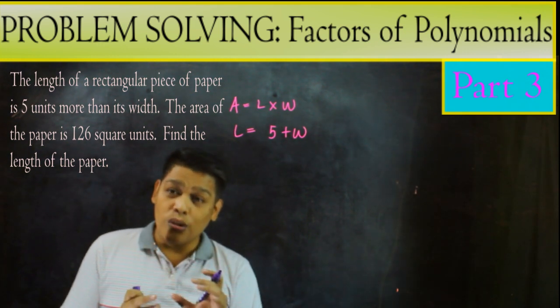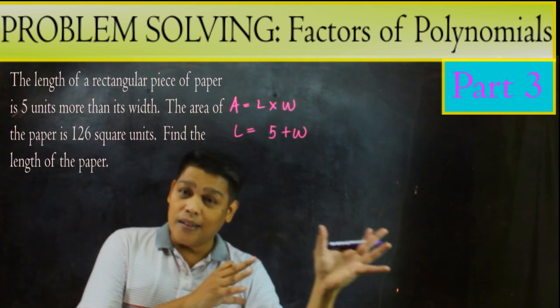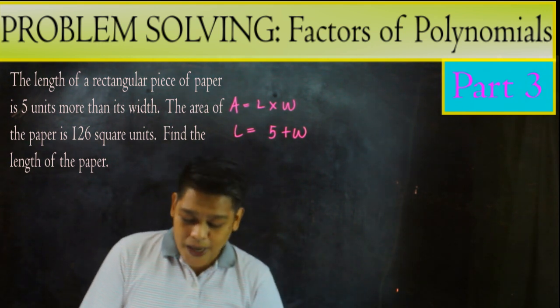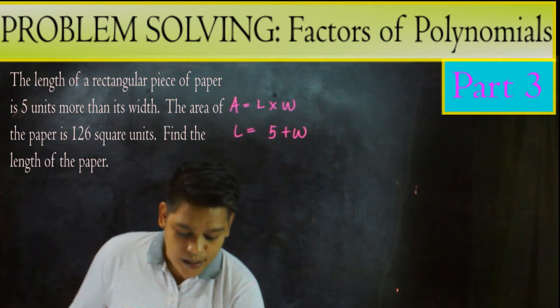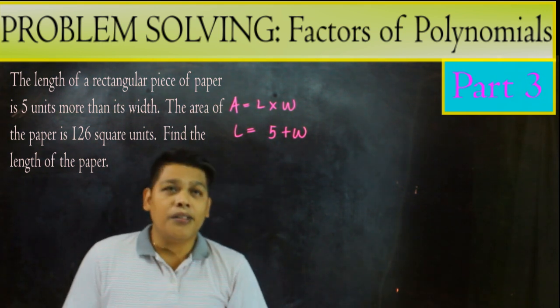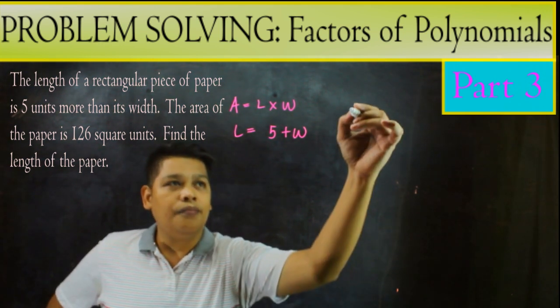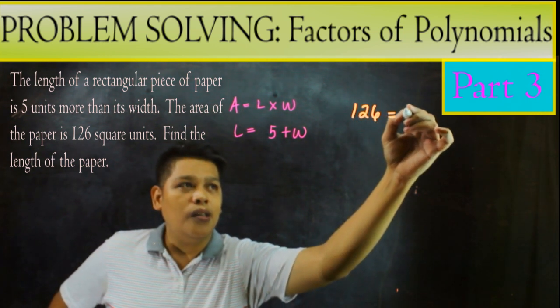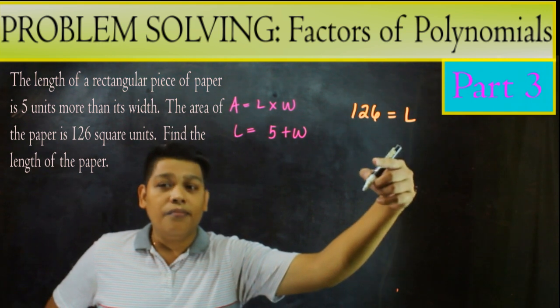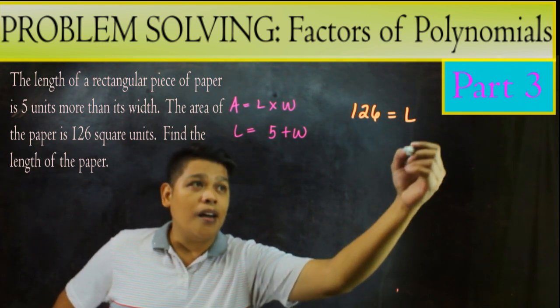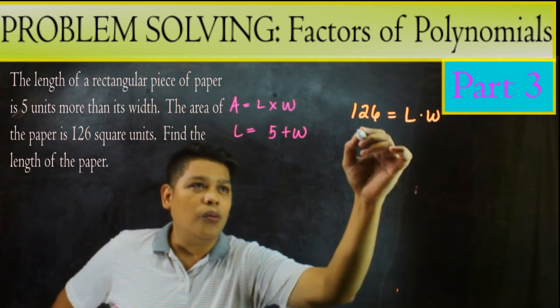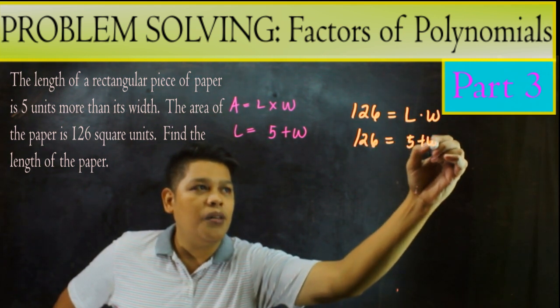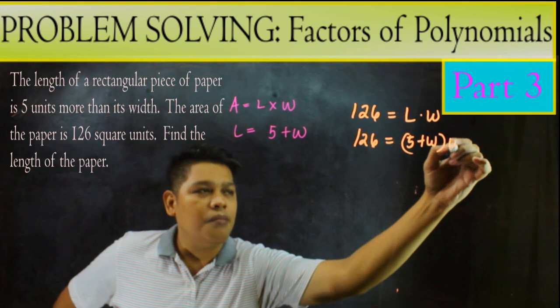Kunyari, kung example lang, kung 2 yung width, ang length is 7. So magba plus 5 ka. So by substitution, isubstitute na natin yung area equals the length times width. So the area is 126 square units. So length, which is the 5 plus W times width. So 126 equals 5 plus W times W.